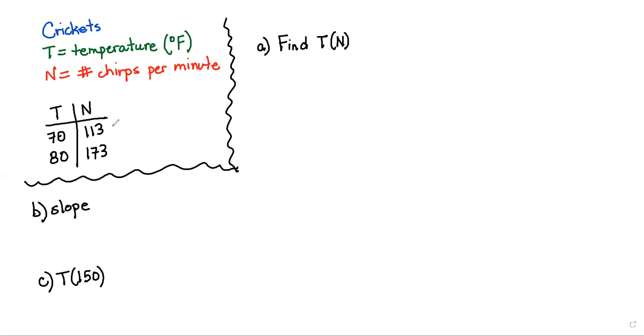We have two pieces of data, but we know or we're told that it's a linear relationship. And so our goal is to find temperature as a function of number of chirps. So that's kind of cool. You could go outside and record chirps per minute and find the temperature. Super cool.